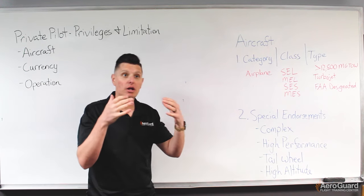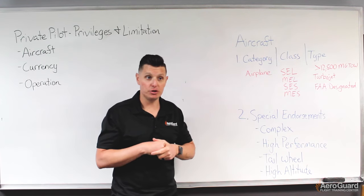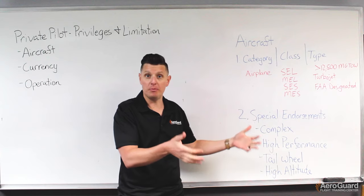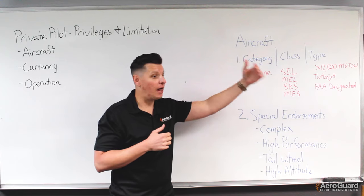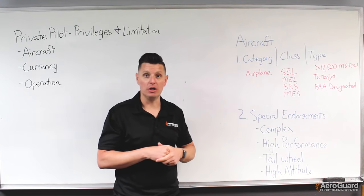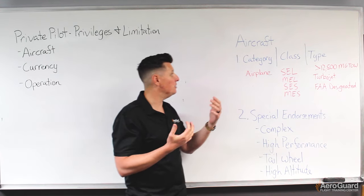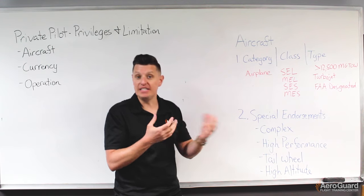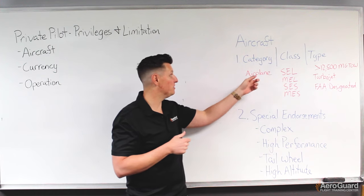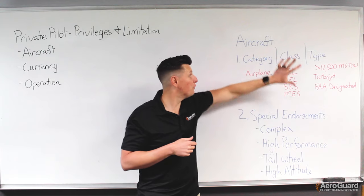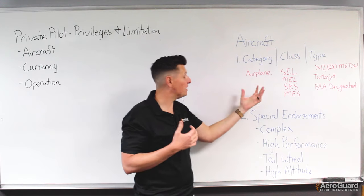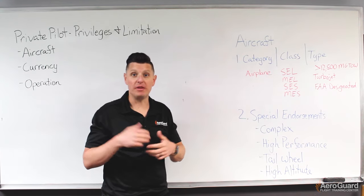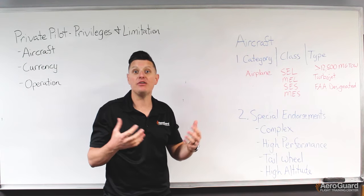As an example, let's say I got my private pilot's license here at AeroGuard. We fly Piper Archers as our single engine airplane. Could I, after completing all training and taking my checkride in the Piper Archer, go and rent a Cessna from a friend or another flight school? The answer is essentially yes, because a Cessna 172 is, for all intents and purposes, identical to an Archer — it's airplane, single engine land, no type rating required. This means I could fly any airplane, single engine land, that does not require a type rating.